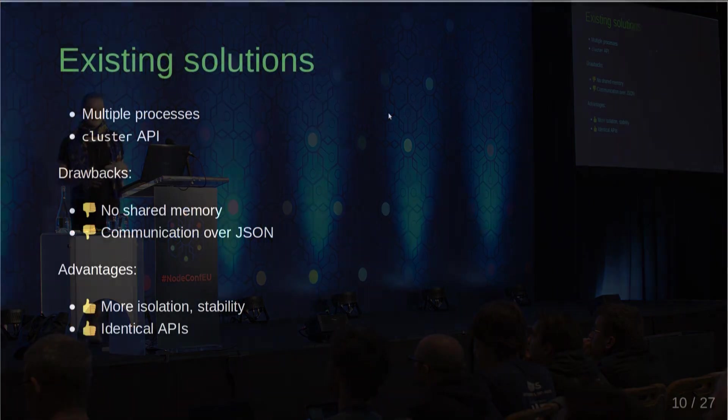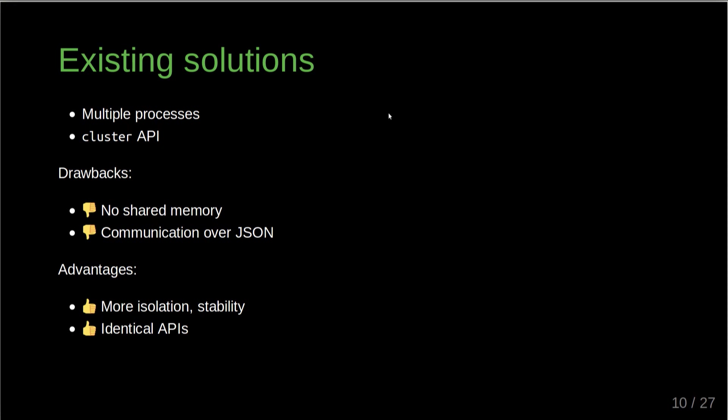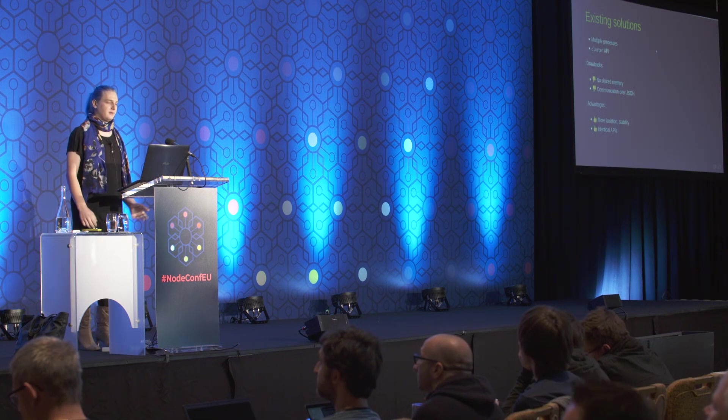You might think we already have solutions for that — we can scale our applications, spawn multiple processes, and use the cluster API. That spawns multiple Node processes that essentially all do the same kind of work, making sure your CPU is fully used. That works pretty well. You still have one process that only does one thing at a time, but if you have four or eight of them, it works well enough — but there are some things you can't do with it.